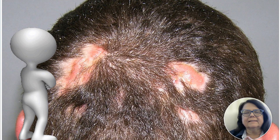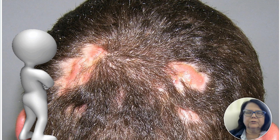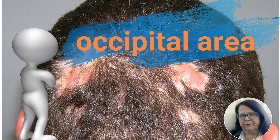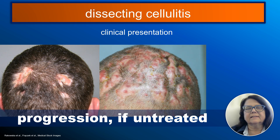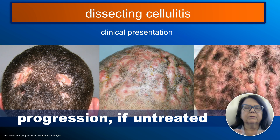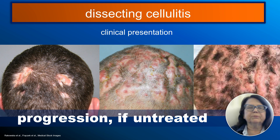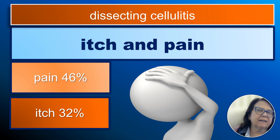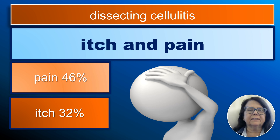Clinically, the disease is manifested by the presence of hairless nodules. They are usually localized primarily in the occipital area. In later phases, the number of these nodules will increase and the disease will develop into multiple interconnecting areas of cicatricial alopecia. The disease is very often associated with itch and pain — approximately half of patients will experience either pain or itch or both.